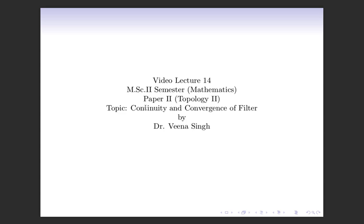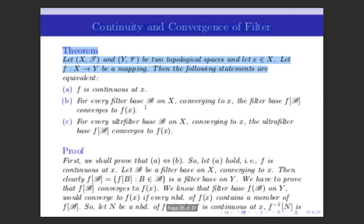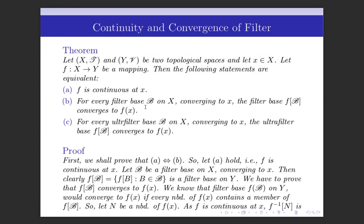Today we will discuss continuity and convergence of filters. The theorem states: let X, T and Y be two topological spaces and let x belong to X. Let F be a mapping from X to Y. The following statements are equivalent: Statement A — F is continuous at x. Statement B — for every filter base B on X converging to x, the filter base F(B) converges to F(x). Statement C — for every ultrafilter base B on X converging to x, the ultrafilter base F(B) converges to F(x). Let us prove this theorem.